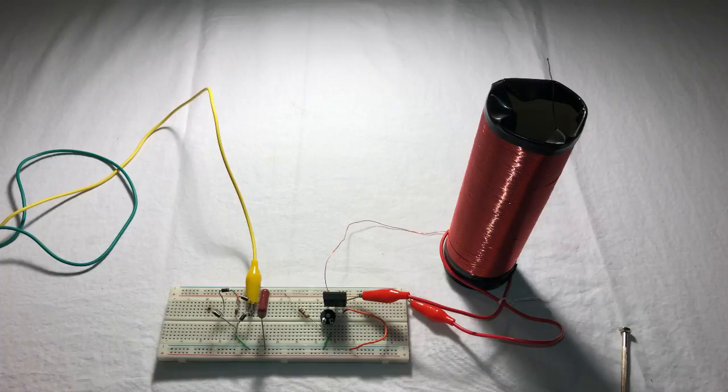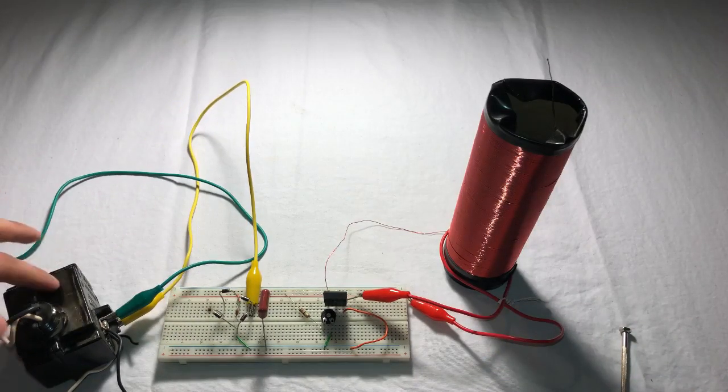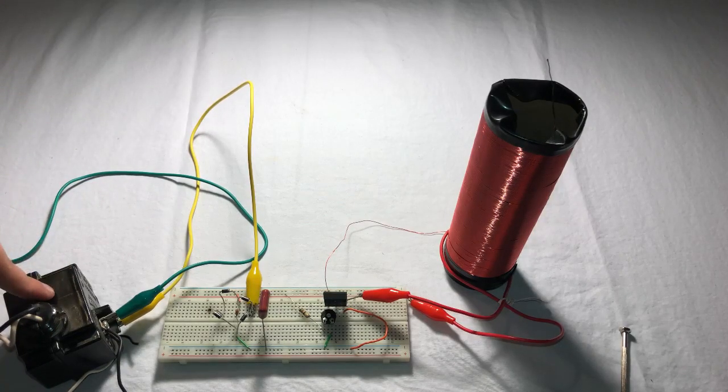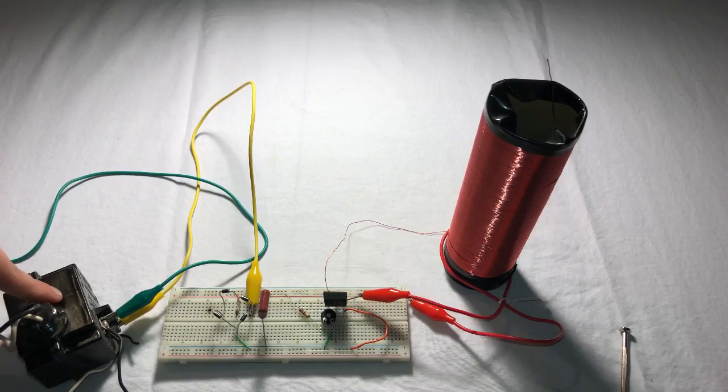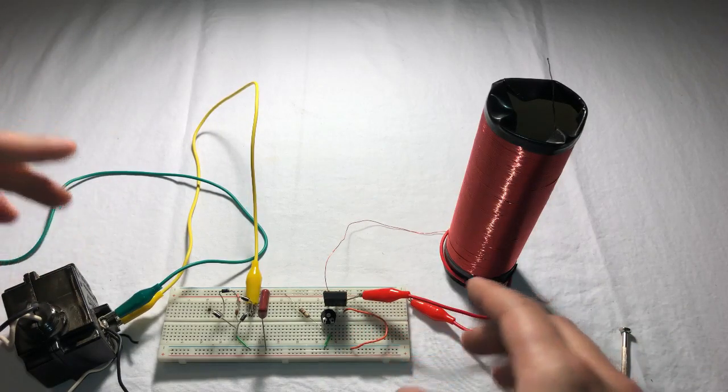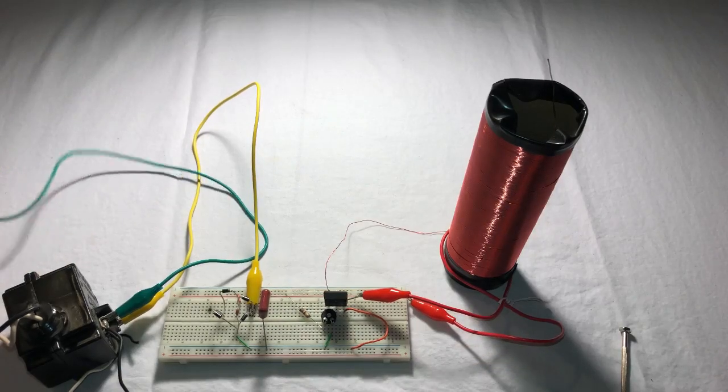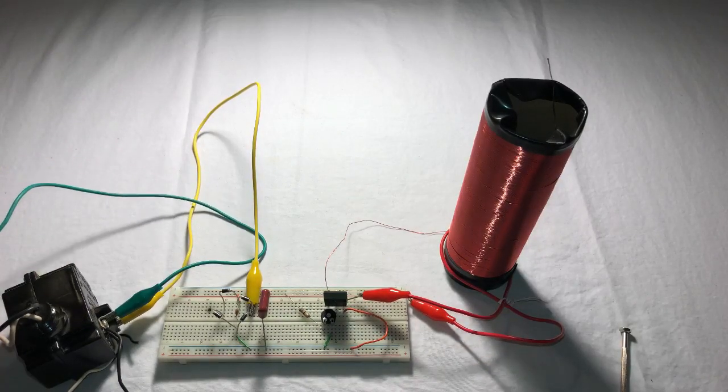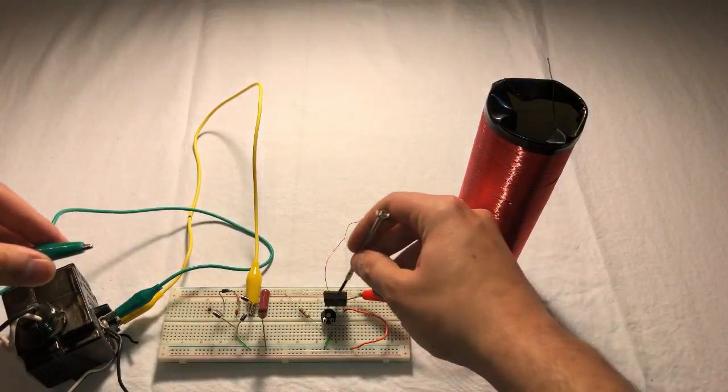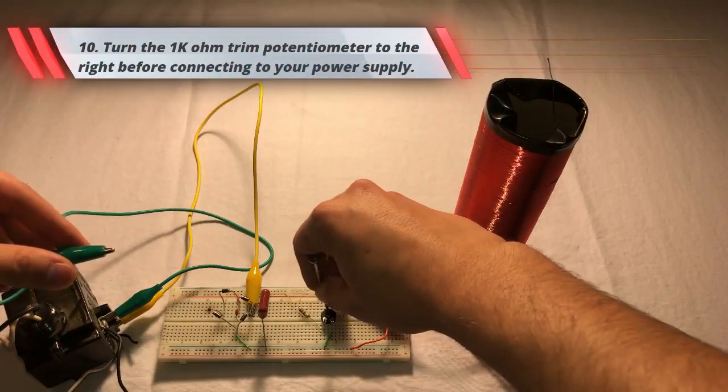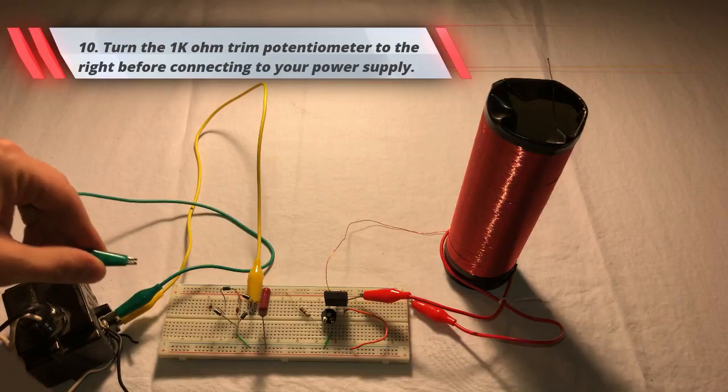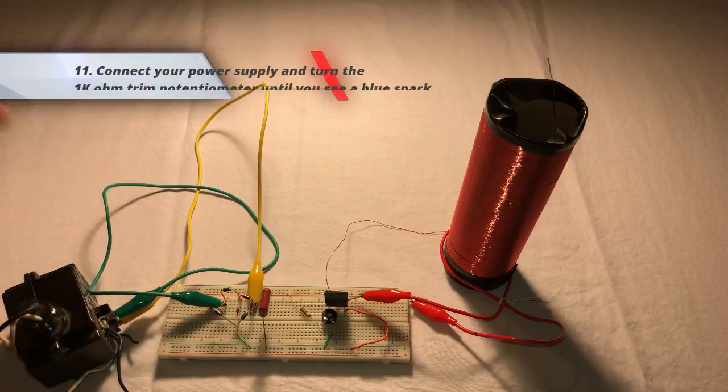So here I have my transformer which I'll be using to power my circuit. So this transformer pushes out around 30 volts. This circuit will work for around 20 to 30 volts. So that's something you should keep in mind when looking for a power supply. So now, before we go ahead and hook it up, we're just going to turn this trim potentiometer all the way to the right. That way it won't overload the circuit. So now we're going to connect this on.